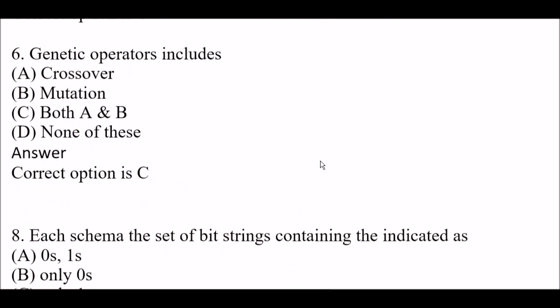Next question: Genetic operators include — Option A: Crossover. Option B: Mutation. Option C: Both A and B. Option D: None of these. Right answer is Option C — both A and B. Genetic operators include both crossover and mutation.